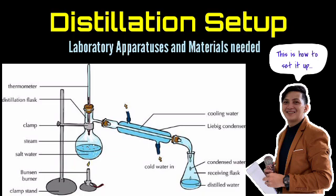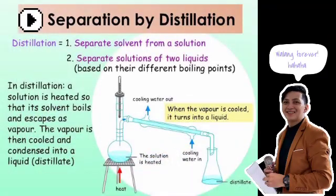You need to set up all those laboratory apparatuses for the distillation process to separate solutions. This is about distillation — to separate a solution, we use distillation. We can separate solvent from a solution, and we can separate solutions of two liquids based on their different boiling points — for example, water and oil, alcohol and oil, or water and acetone. In distillation, a solution is heated so that its solvent boils and escapes as vapor. The vapor is then cooled and condensed into a liquid called distillate.